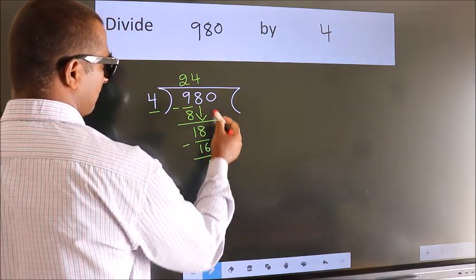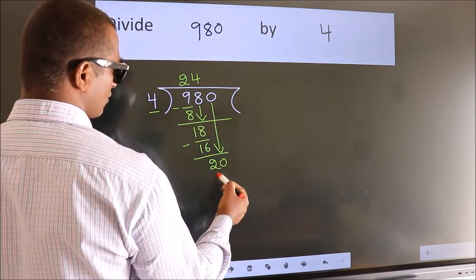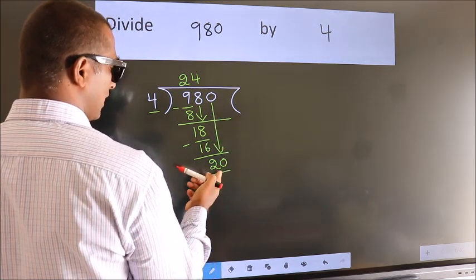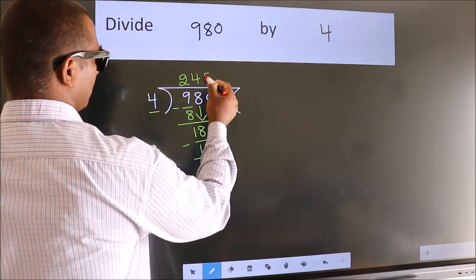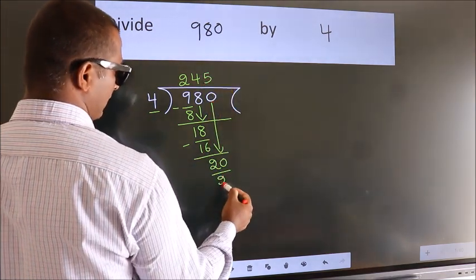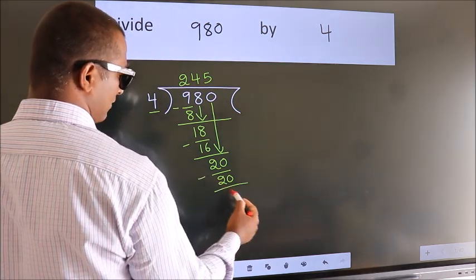After this, bring down the beside number. So 0 down. So 20. When do we get 20? In 4 table. 4 fives 20. Now we subtract. We get 0.